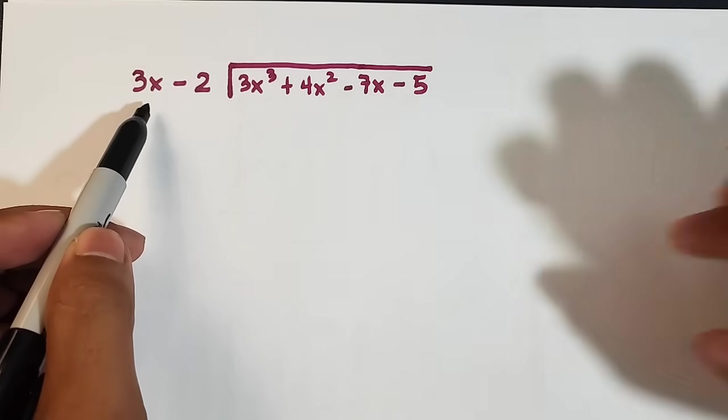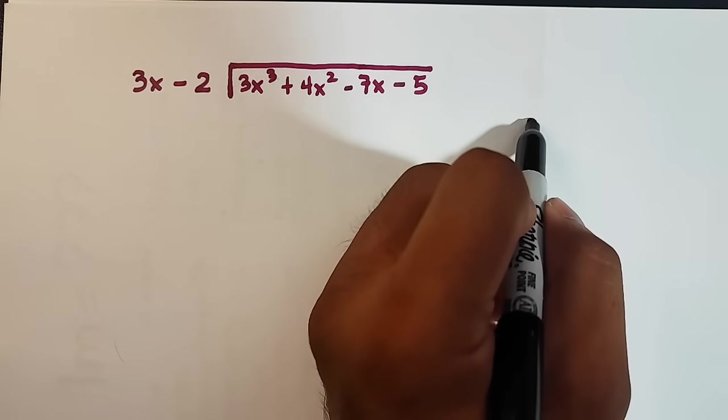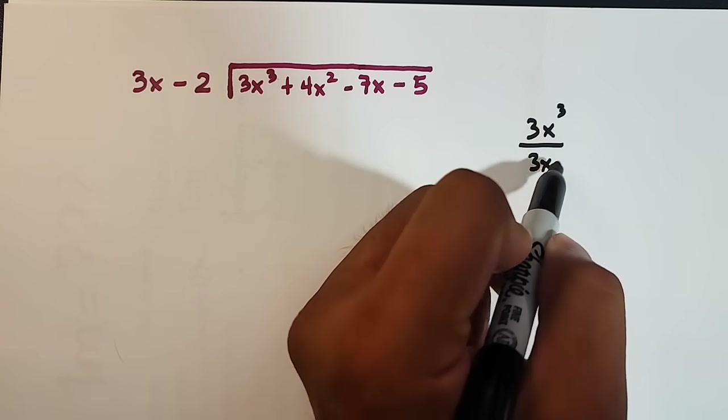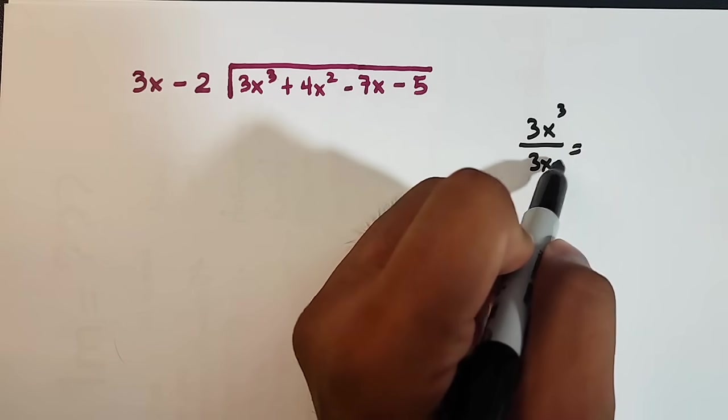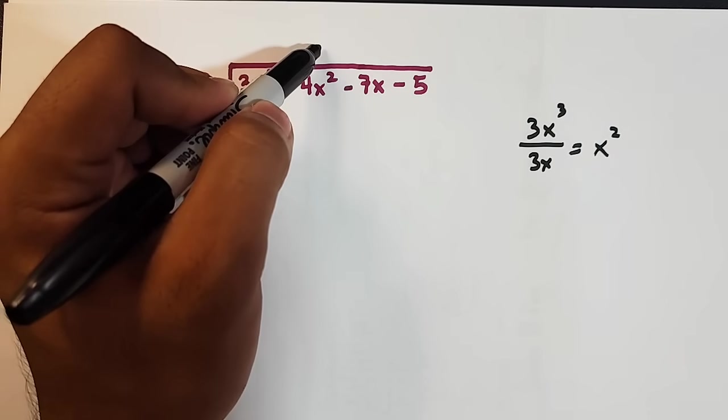3x cube divided by 3x. So we'll put it here for our side solution. 3x cube divided by 3x. So 3 over 3 is 1. x cube over x is x square. So we place here x square. Here in the second position.